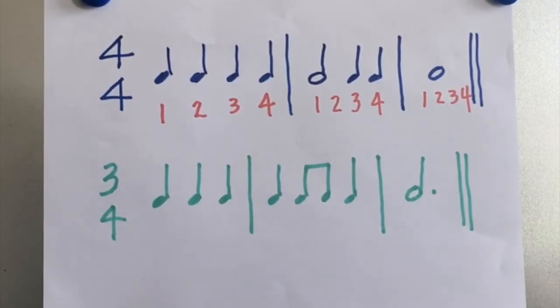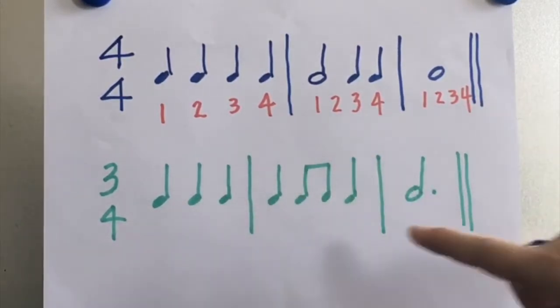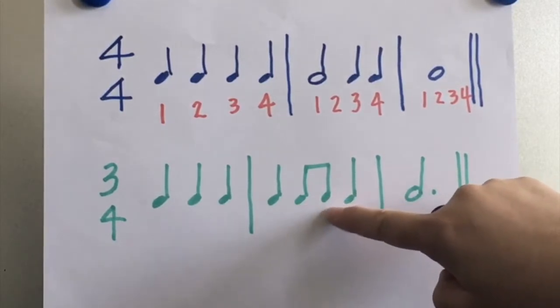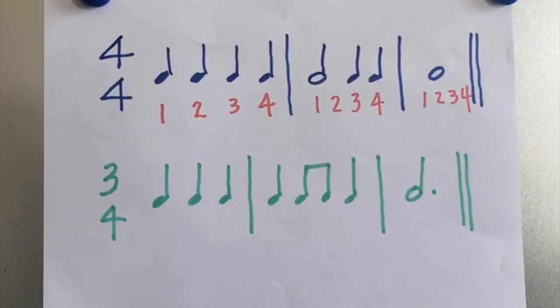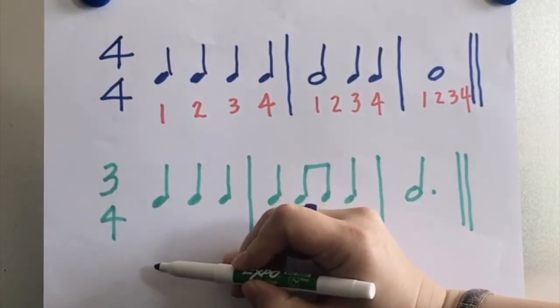So what we do to make it easier to count is we pick the one that is broken down into the smallest unit, and in this case it's these two eighth notes. So remember, two eighth notes is one beat.